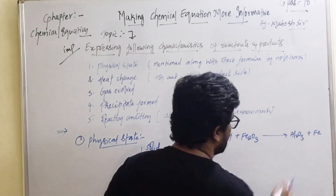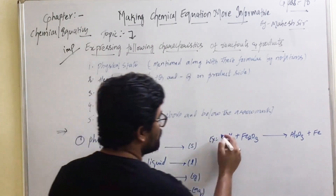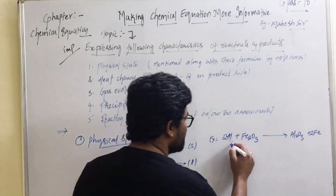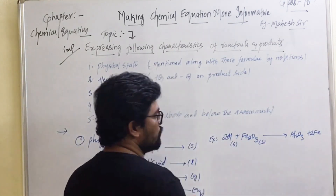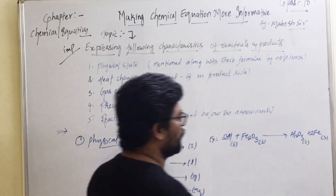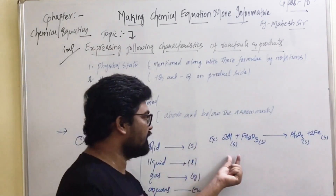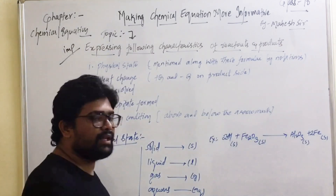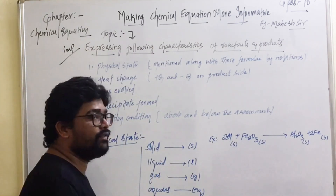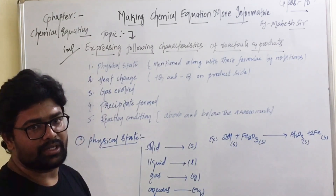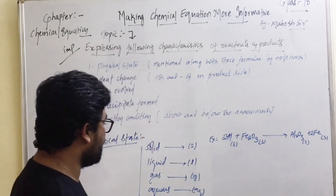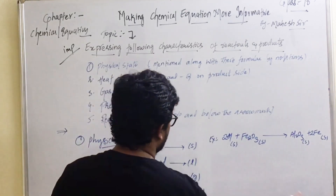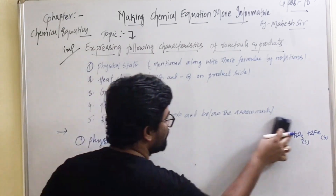Let us take an example: Al + Fe₂O₃ gives rise to Al₂O₃ + Fe. This is a balanced chemical reaction. We need to express the physical states. Aluminum is a solid, iron oxide is a solid, aluminum oxide is also solid, and iron is also solid — all expressed with the notation (s). If there is a liquid, gas, or aqueous solution, we use (l), (g), or (aq) respectively.